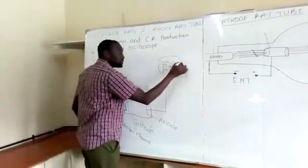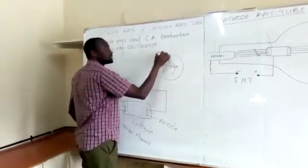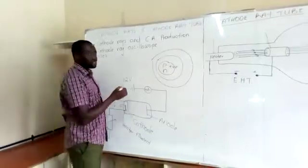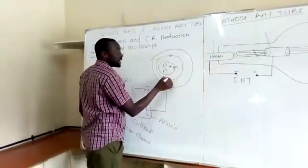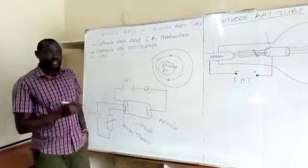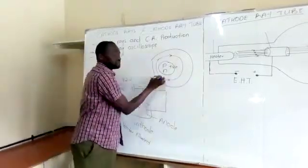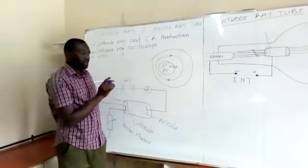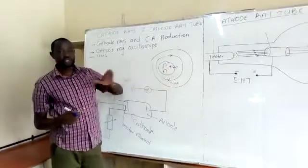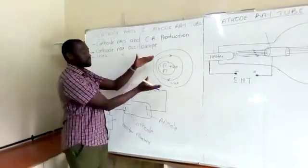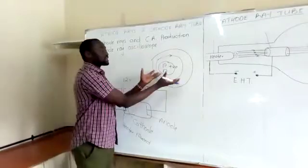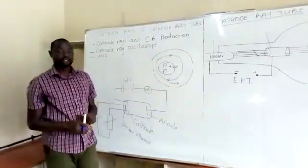Then, around the nucleus, we have the energy levels. And in these energy levels, this is where electrons are. The electrons are kept in position. We know that electrons are negatively charged and the protons are positively charged, and therefore the two attract each other. That is why the electrons are kept in position in their energy levels.